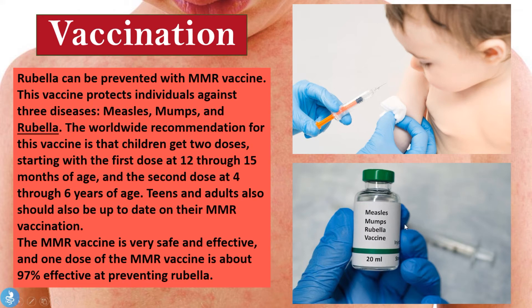The worldwide preventative measure against mumps, measles, and rubella is the MMR vaccine, given in two doses: the first at 12 to 15 months, and the second at four to six years of age. It is 97% effective at preventing the onset of the disease. Getting vaccinated comes highly recommended because prevention is always better than cure — given the devastating effects this disease can cause, it is always better to prevent the disease rather than treat its symptoms. Vaccination is an absolute must.